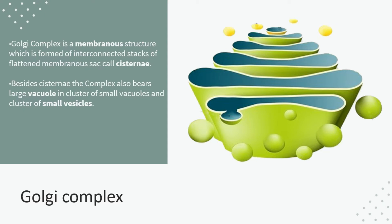Besides cisternae, the Golgi complex also has a cluster of large and small vacuoles. So basically, the Golgi complex is a membranous structure which has large and small vacuoles and a small number of vesicles.